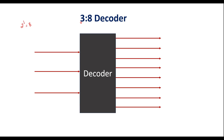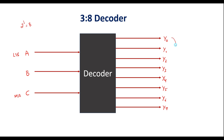Here, 8 are the outputs and 3 inputs. As we know, in a decoder any one of the output lines is always high, and the rest are 0. Let me consider A, B, C as the inputs, where C is the MSB and A is the LSB. Let me consider Y0, Y1, Y2, Y3, Y4, Y5, Y6, and Y7 as the outputs — these are active high outputs.